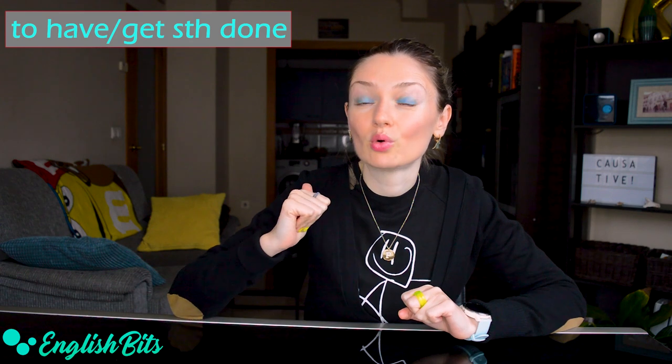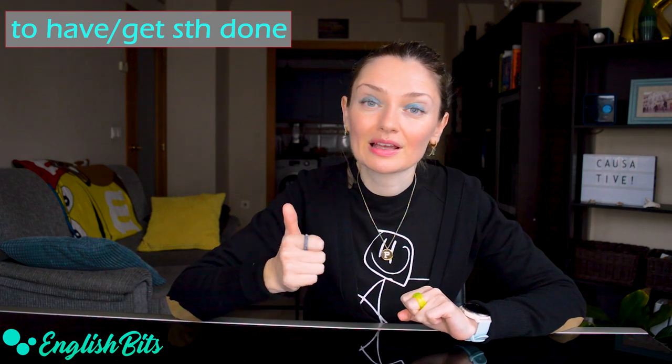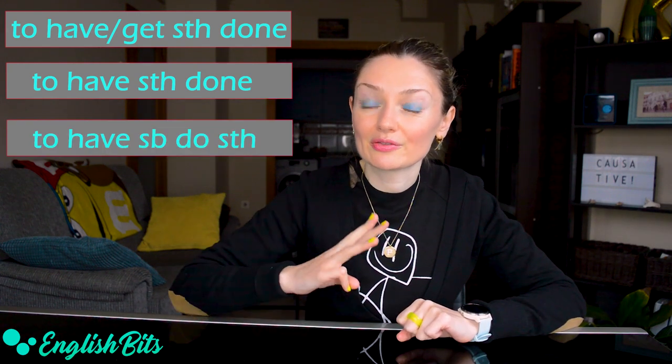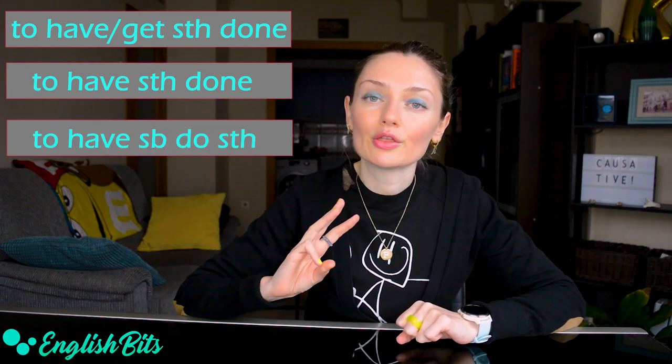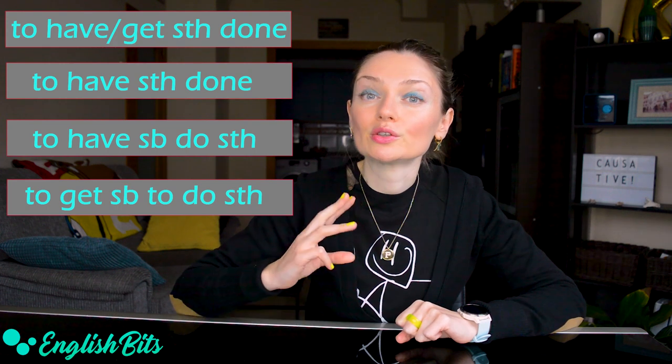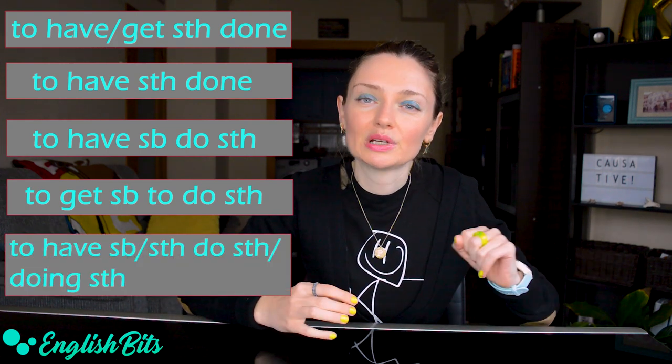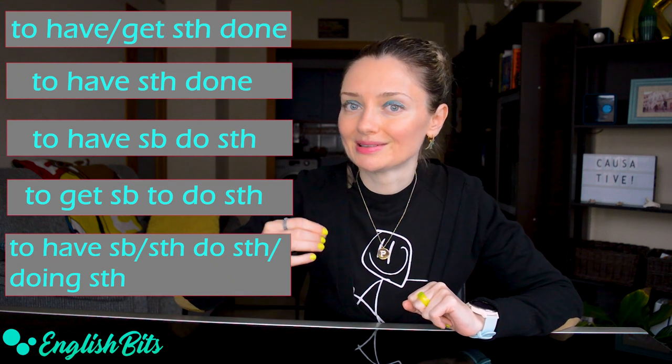Causative verbs are used to show that something or someone caused something to happen. Today we're going to cover five causative structures. The first one: to have or to get something done. The second one: to have something done. The third structure: to have someone do something. The fourth: to get someone to do something. And number five: to have someone do something or doing something.